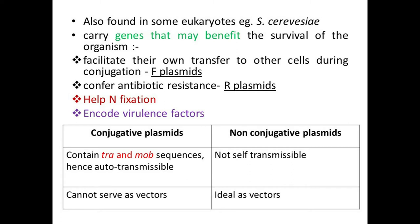Plasmids benefit the survival of the organism — they give antibiotic resistance, help nitrogen fixation, and contain genes coding for virulence factors. There are also genes in plasmids which help the transfer of that plasmid to other cells during conjugation. Conjugation is a type of primitive gene or DNA exchange in bacterial cells, considered a primitive type of sexual reproduction. Plasmids exchanged through this process are called F plasmids.